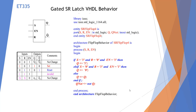Here I have a gated SR latch behavior. According to the truth table, for a set we need S=1, R=0, and enable=1 — then we get Q=1. If S=0 and R=1 and enable=1, then Q is reset to 0. If neither is true, no change. Q and Q_NOT are always opposite.